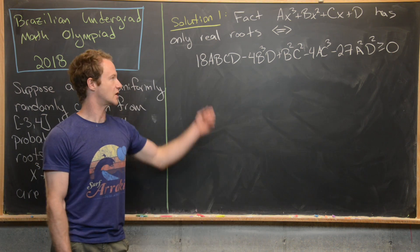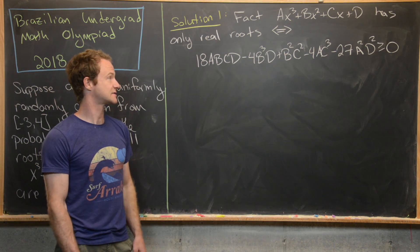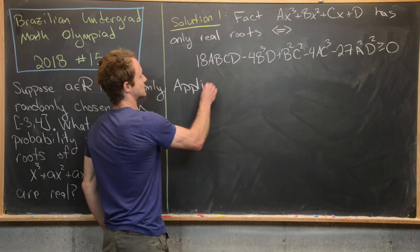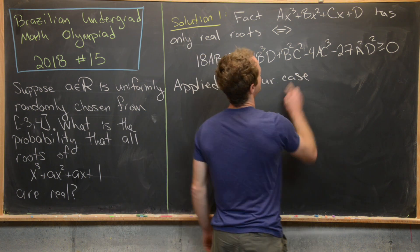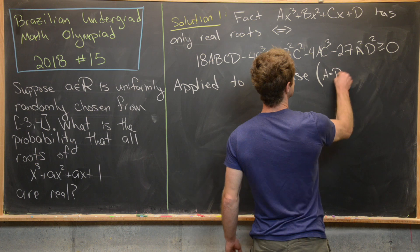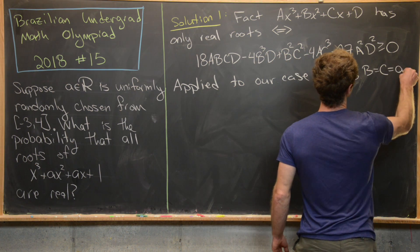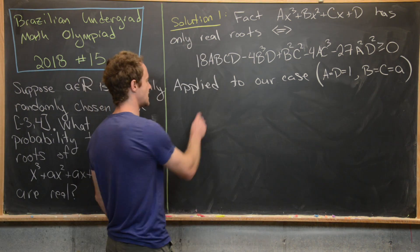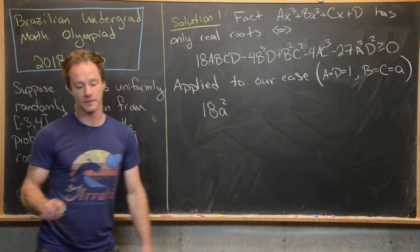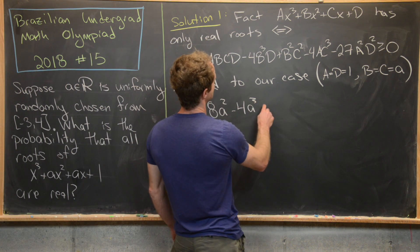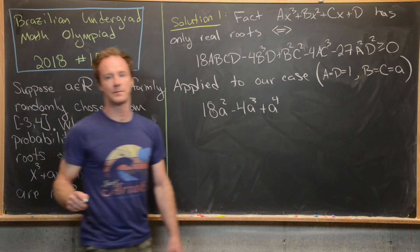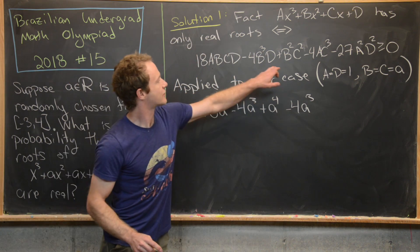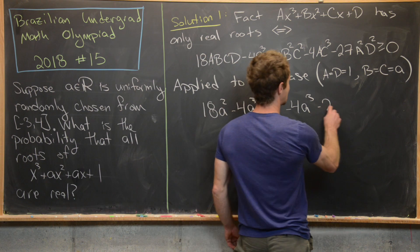The discriminant is: 18ABCD minus 4B cubed D plus B squared C squared minus 4AC cubed minus 27A squared D squared. Notice this is a homogeneous quartic polynomial in the coefficients of the cubic. There's a lot of work that goes into constructing this result, so we won't derive it here. Applying this to our case: A equals D equals 1 and B equals C equals little a, our parameter.